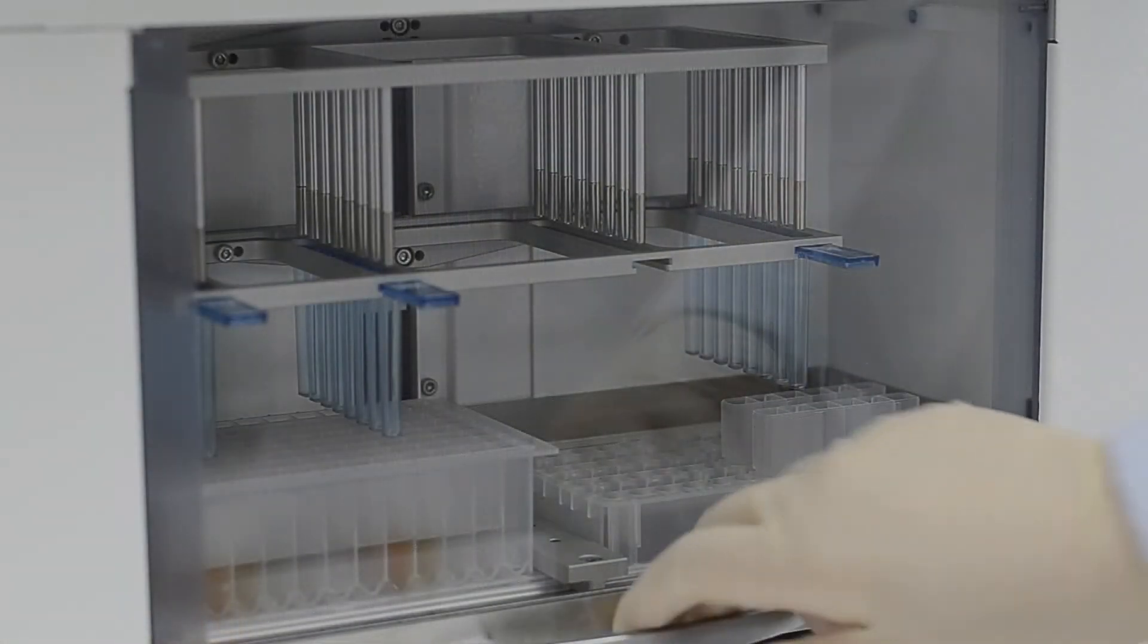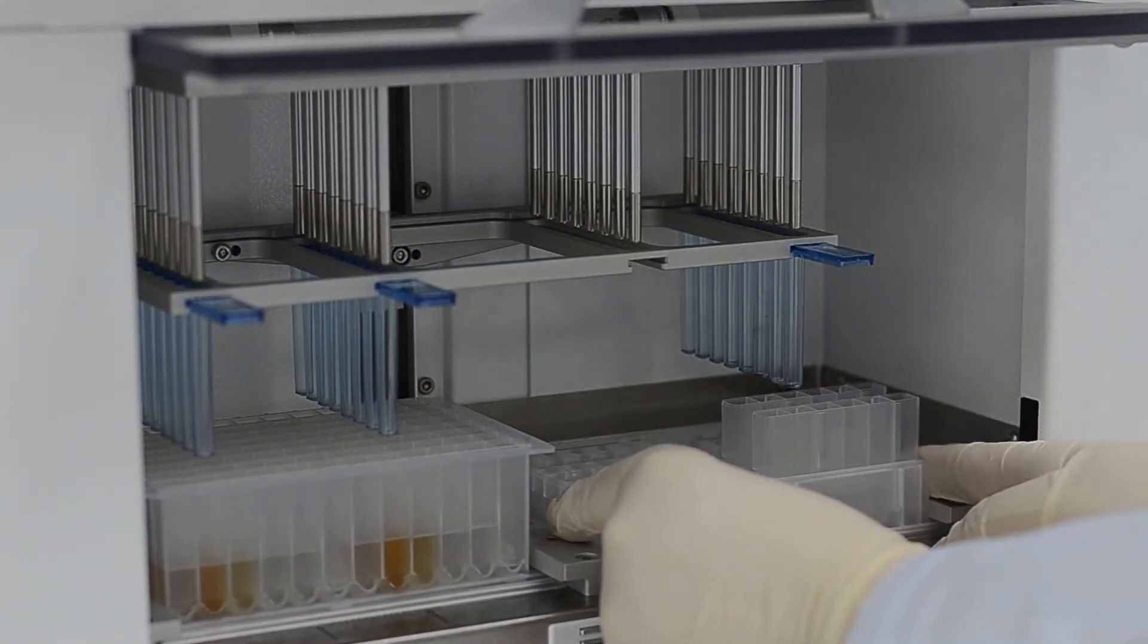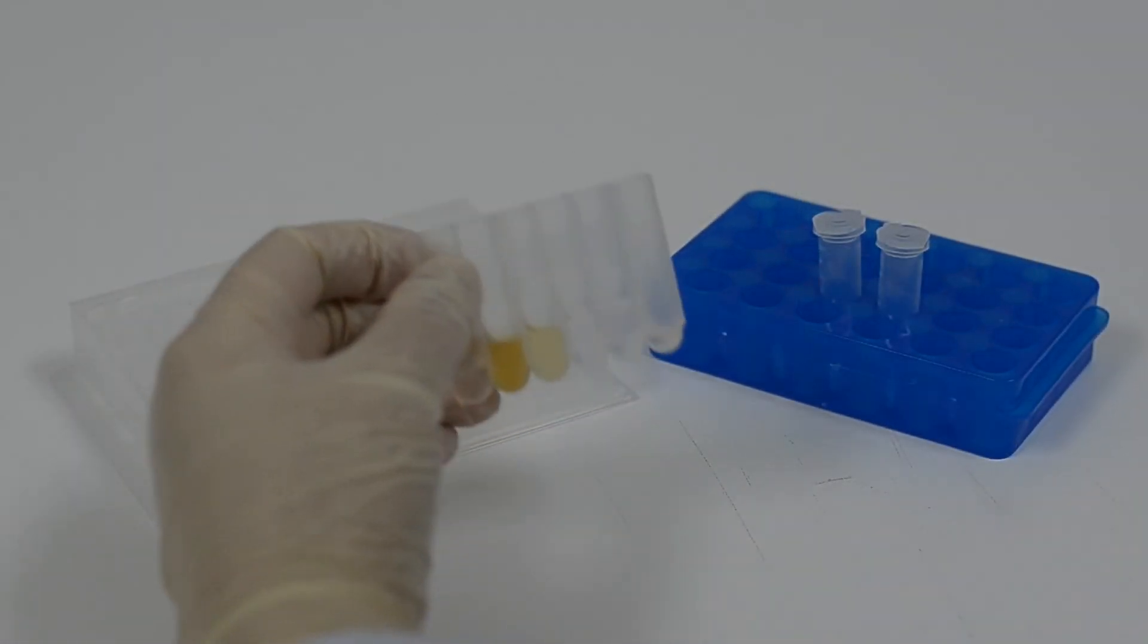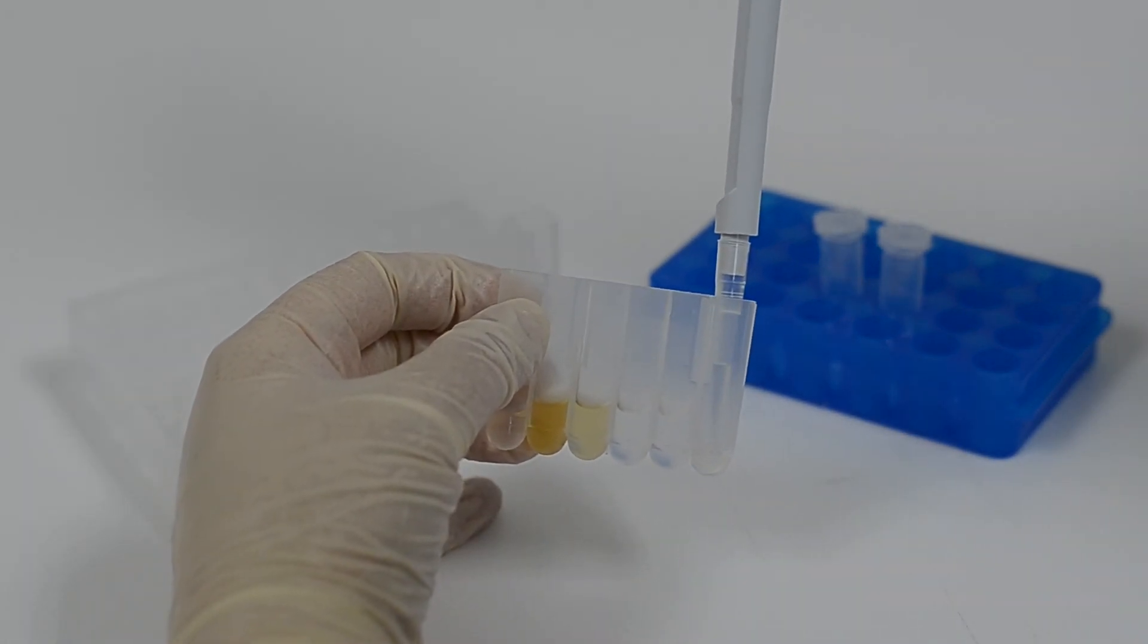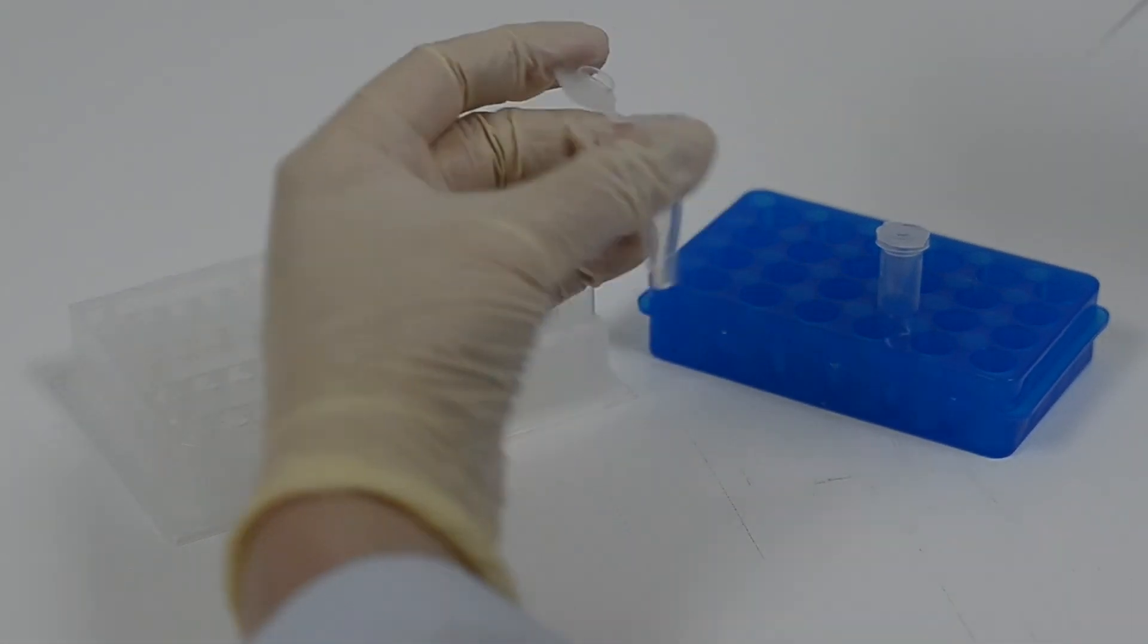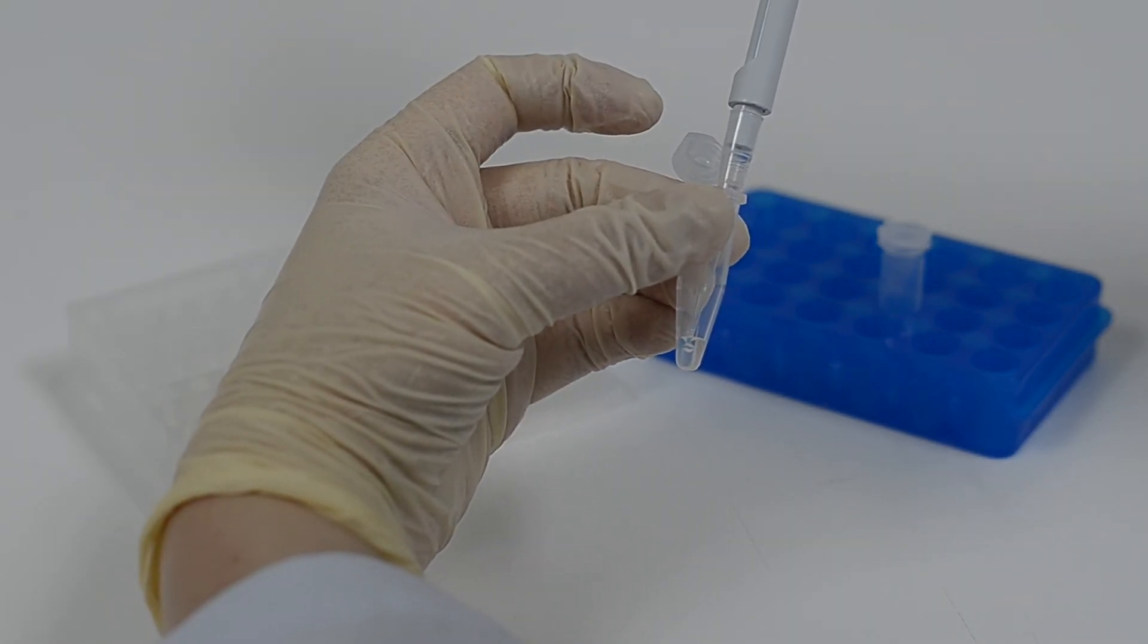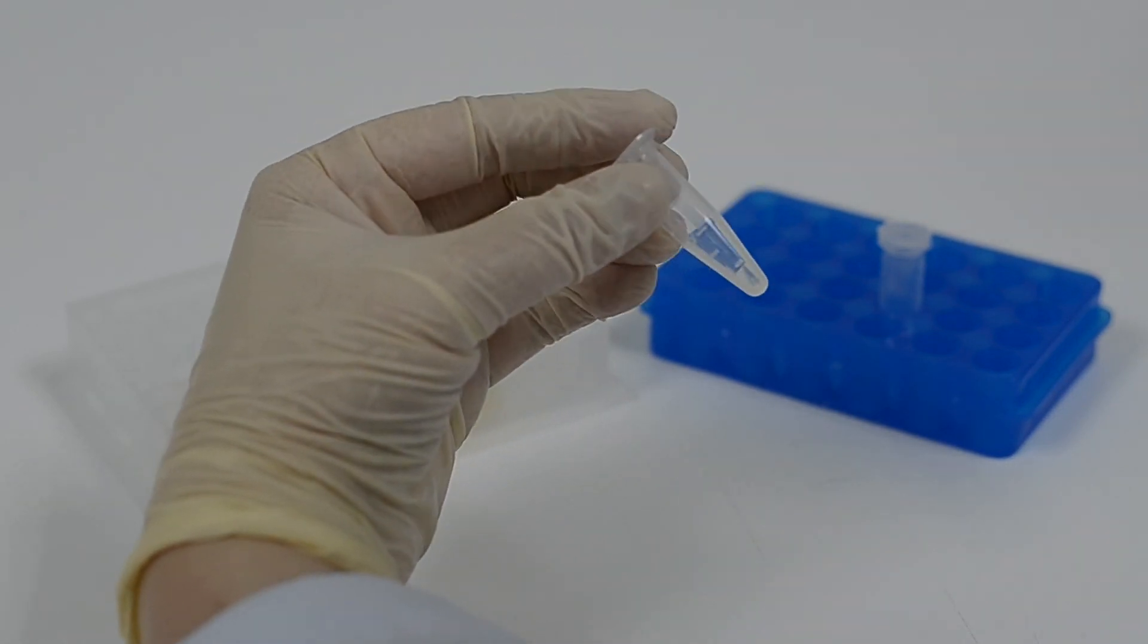After the program ends, remove the reagent plate and tube. Transfer eluted DNA from 6 and 12 well to a clean 1.5ml microcentrifuge tube. DNA is now ready for PCR and other downstream applications.